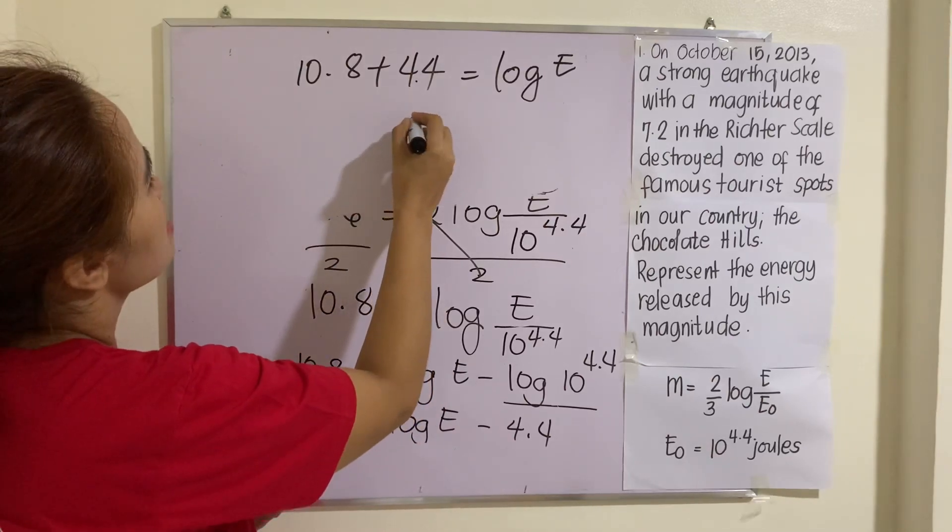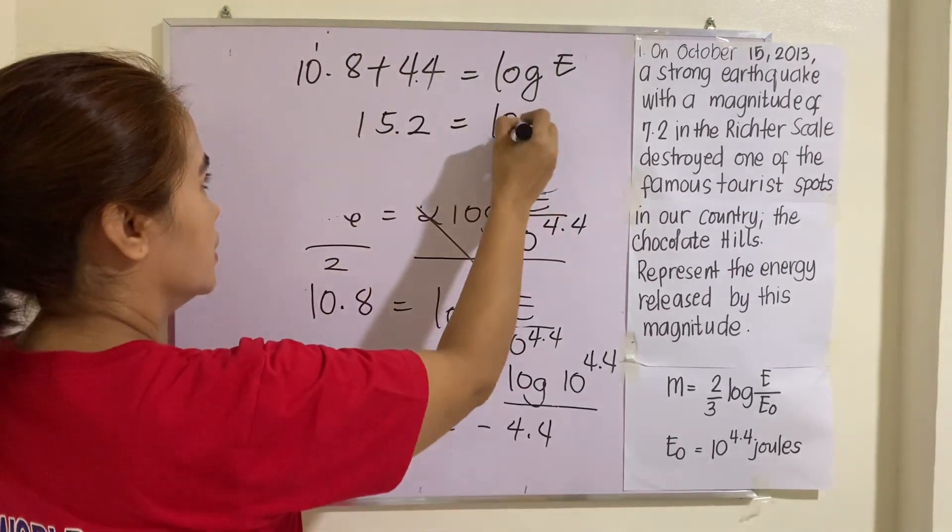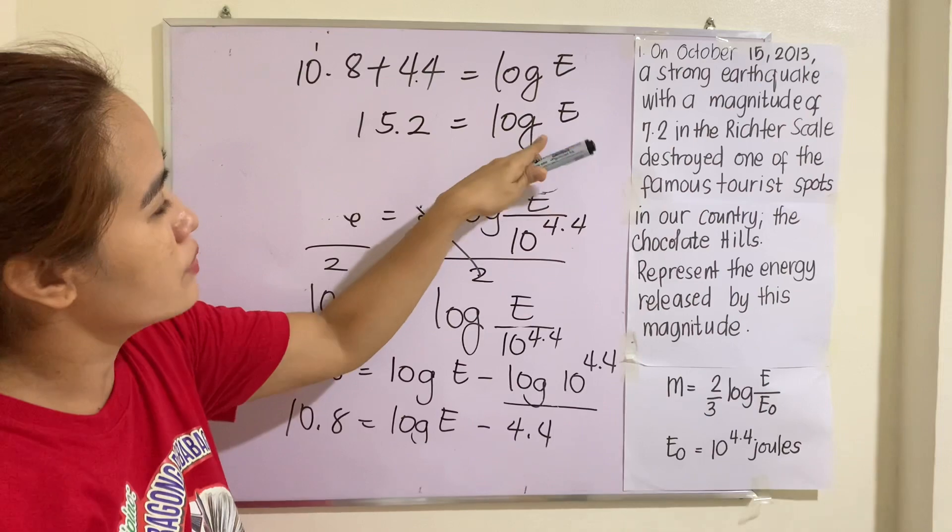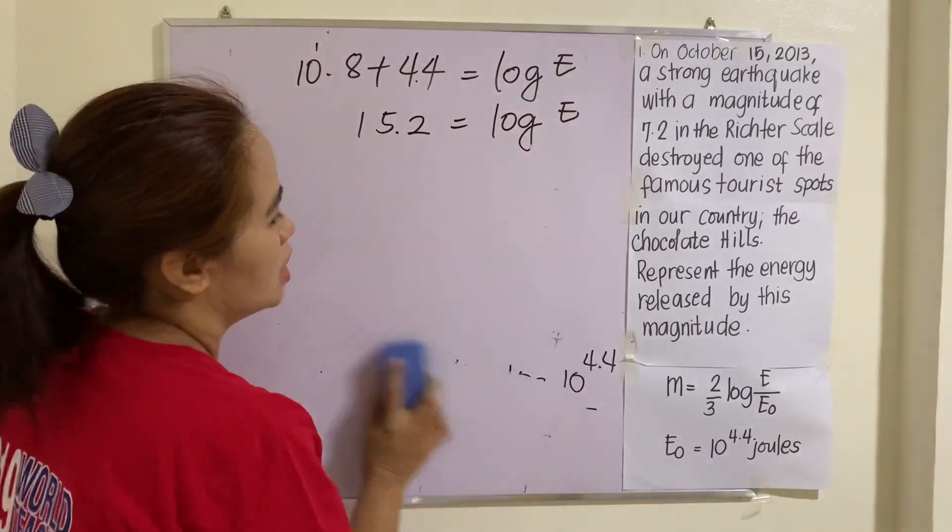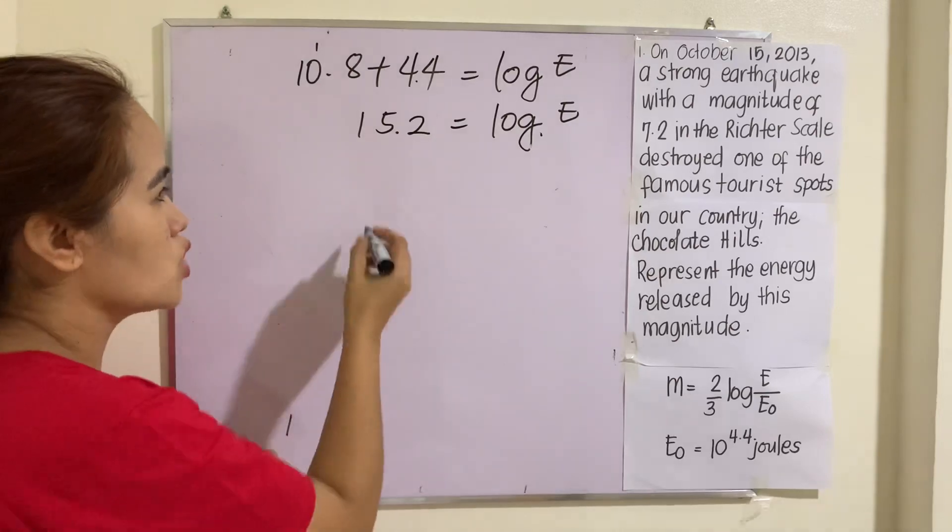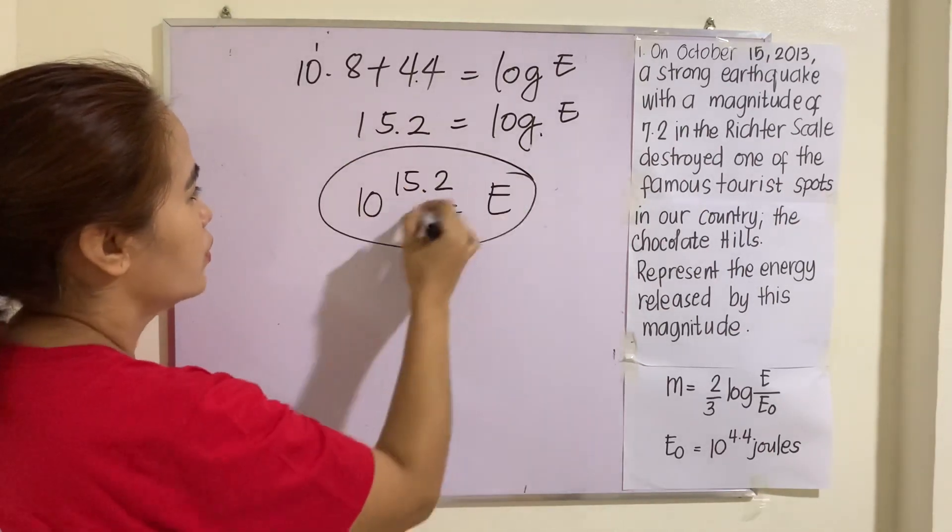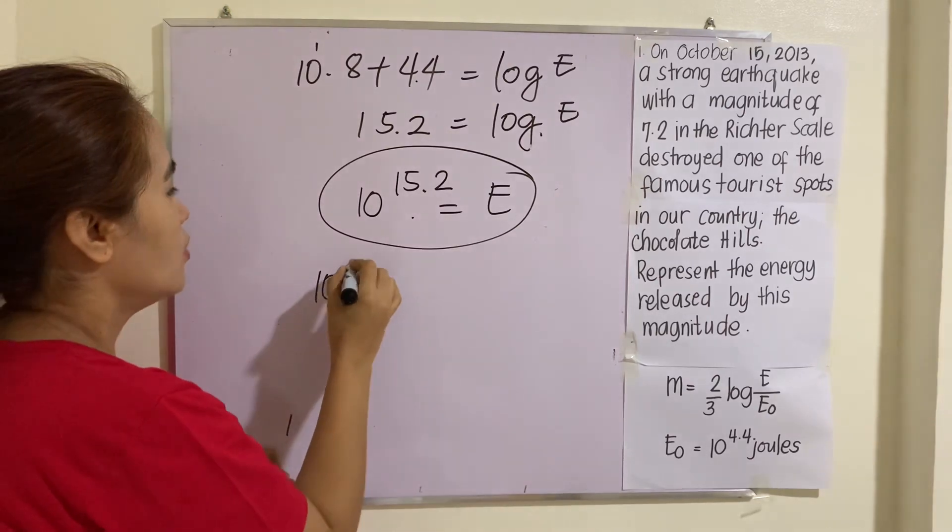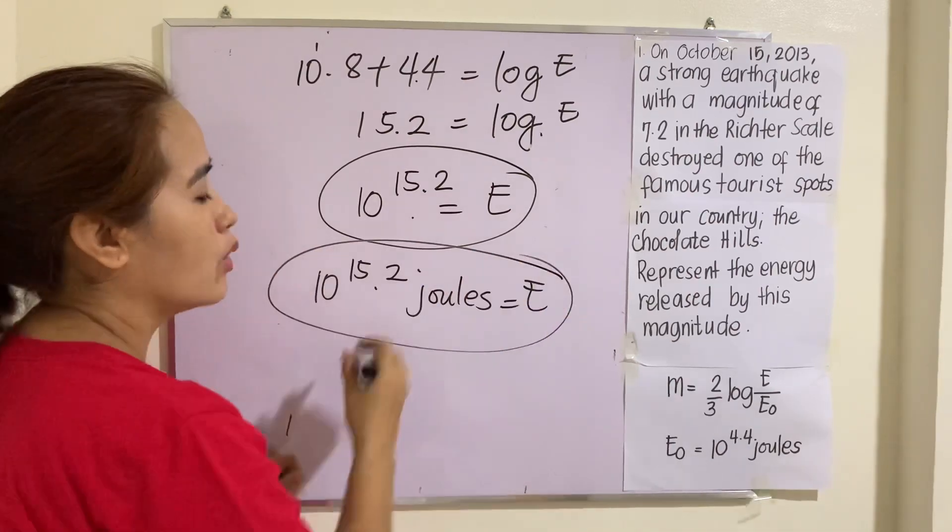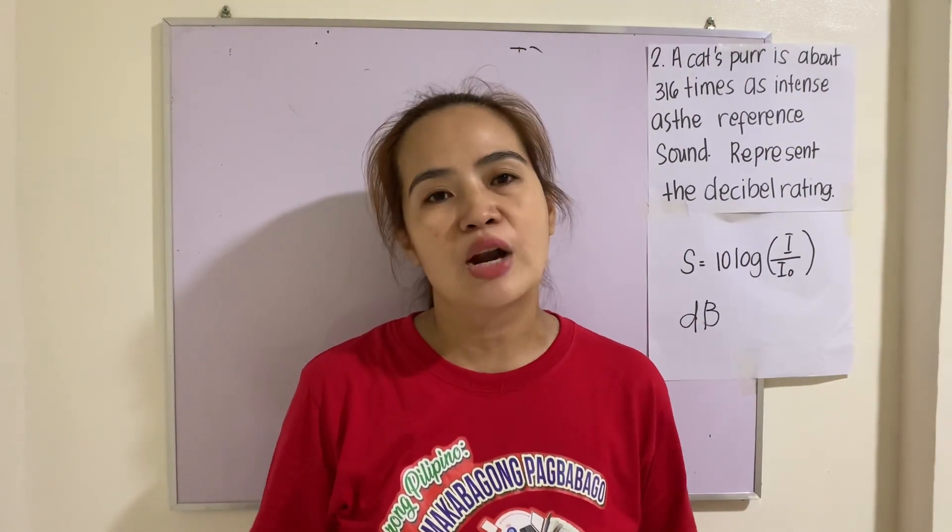So what is this? This one is 12. Carry 1. That will be 15.2 = log E. So now, how are we going to solve for E then? Remember that the base of this is 10. And we will thus be representing E. So this one is imaginary 10. Change it to exponential. That will be 10^15.2 = E. So this one is the value. Of course, this one should be in joules. So 10^15.2 joules. So this is the value of E. This is how you will represent E.